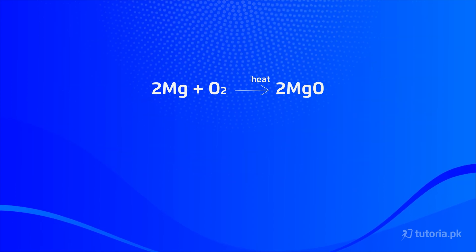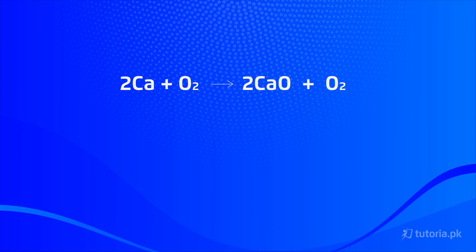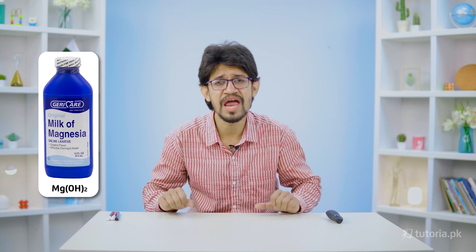Magnesium requires heating to react with oxygen to form magnesium oxide. Calcium reacts with oxygen at room temperature to form calcium oxide, showing calcium is more reactive than magnesium — reactivity increases along the group. Because magnesium is lightweight, its alloy with aluminum is used in automobiles and spacecraft. Magnesium hydroxide — known as milk of magnesia — is used as an antacid. Calcium is an important element for teeth and bones, and calcium and potassium ions are essential for normal heart function.